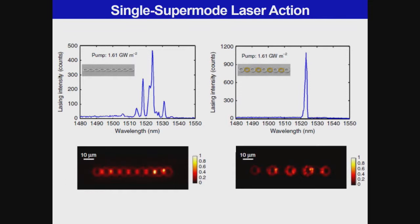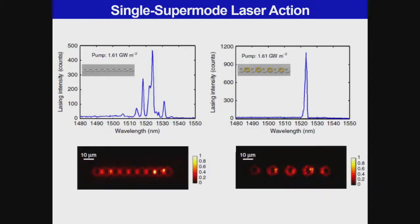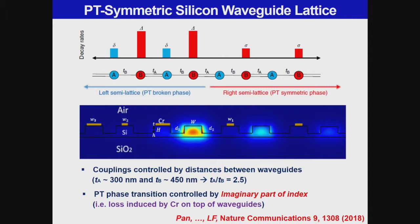In a control experiment without non-Hermitian gain-loss modulation, the topological zero mode and all other bulk states reach lasing threshold simultaneously, leading to multi-mode lasing and rather uniform laser radiation in the far field. This confirms the crucial role of non-Hermitian modulation in selecting the topological zero mode. Beyond robust mode selection, we asked: can non-Hermitian photonics create a topological state where no topological state is expected to exist?